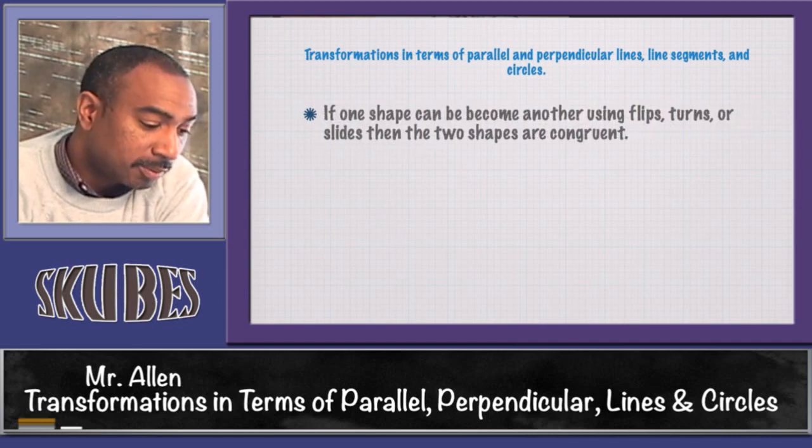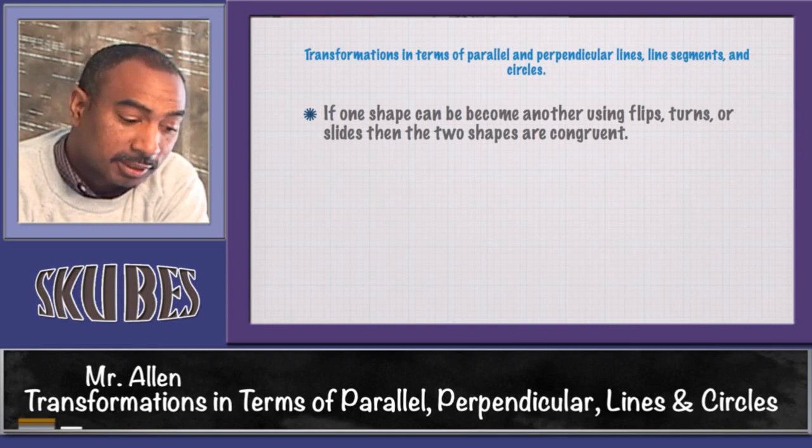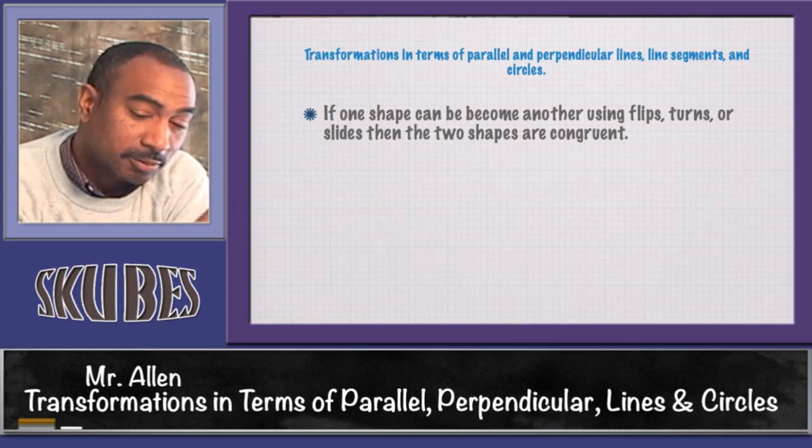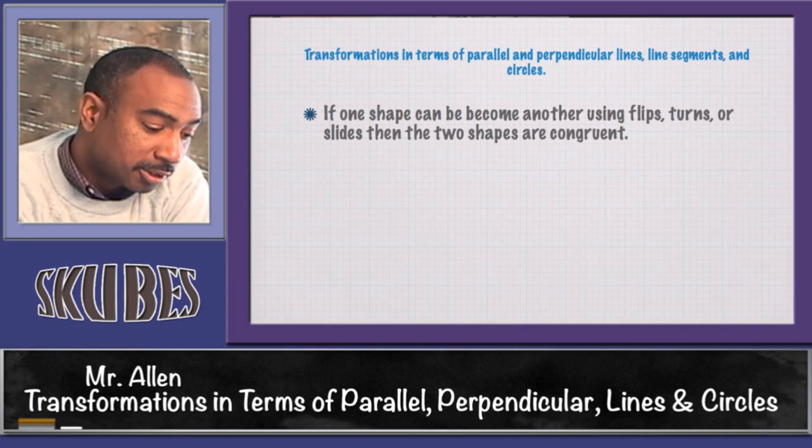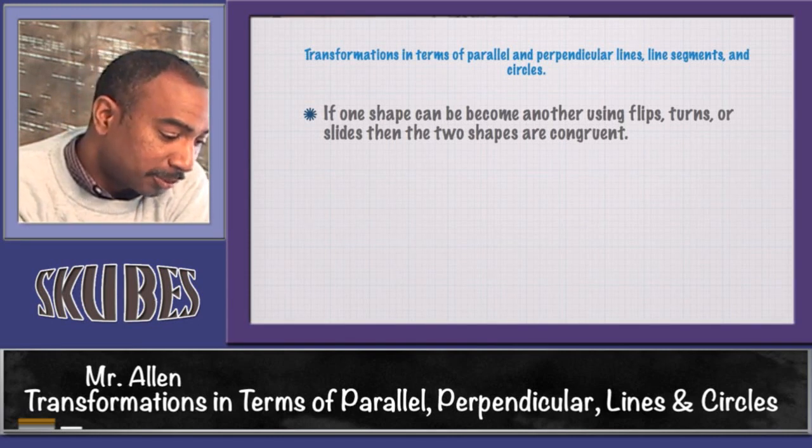If one shape can become another using flips, which is the reflection, or turns—that's another word for rotation—or slides—that's another word for translation—then the two shapes are congruent.